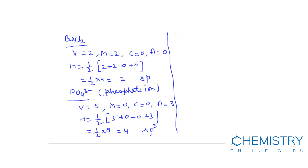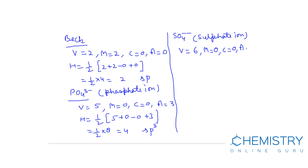Another example is SO₄²⁻, the sulphate ion. The number of valence electrons in sulfur is 6, so V equals 6. Oxygen is bivalent, so M equals 0. C equals 0. A equals 2 because 2 negative charges are present. H equals one-half times (6 plus 0 minus 0 plus 2) equals one-half of 8, which equals 4. When H equals 4, hybridization is sp3.